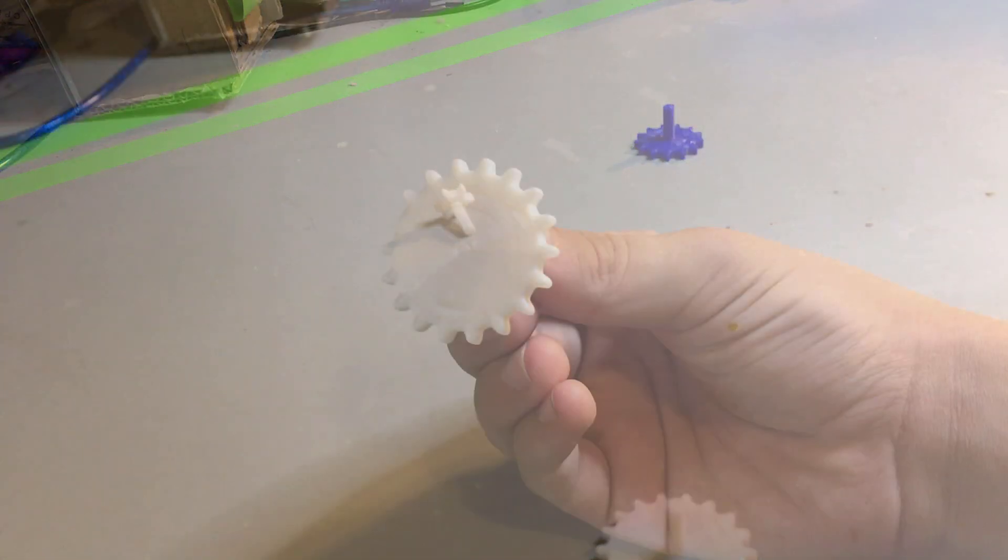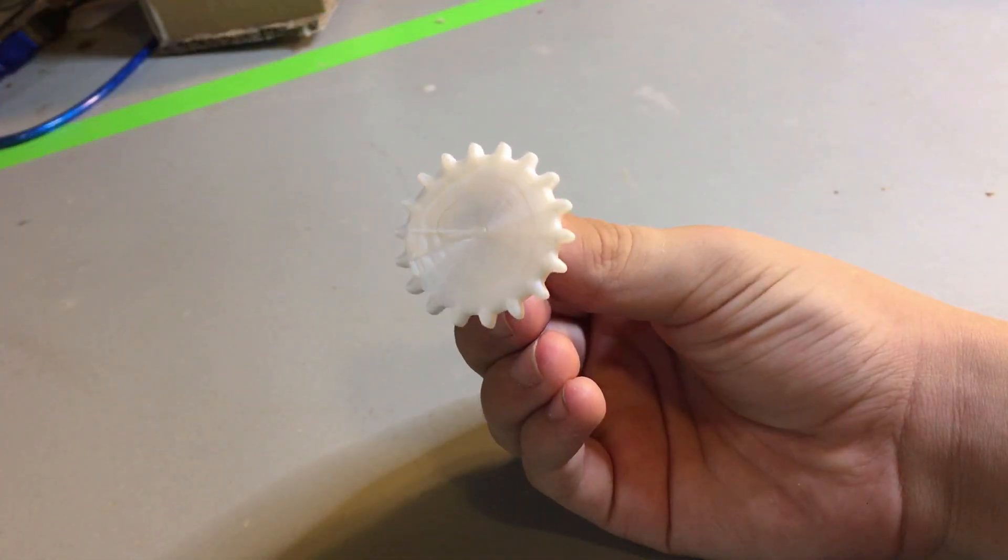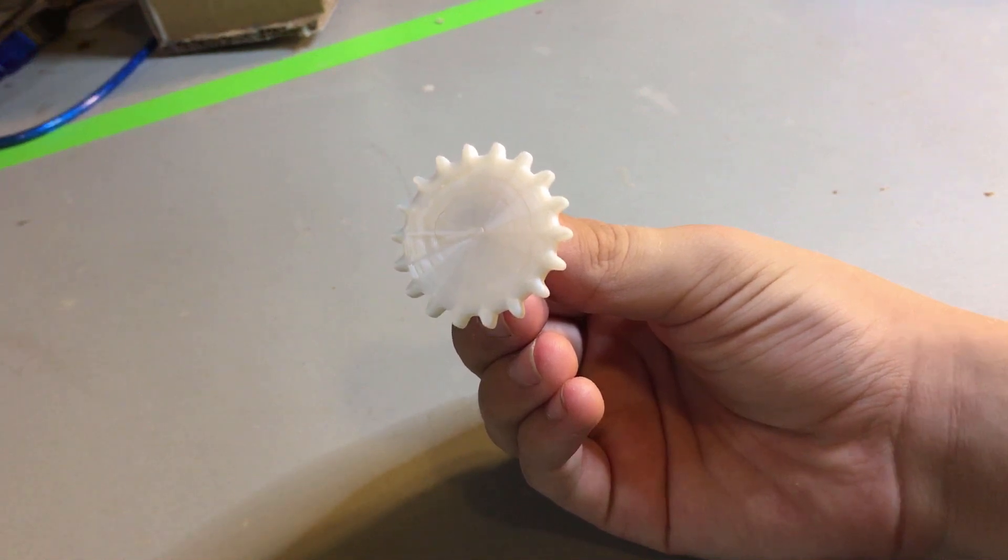A normal gear looks something like this. It may look a bit smoother, but that's because this gear came out of a 3D printer.